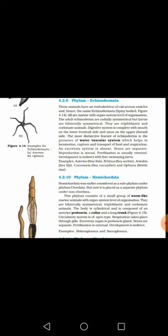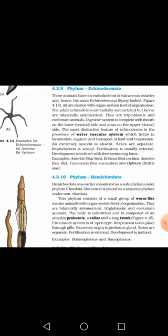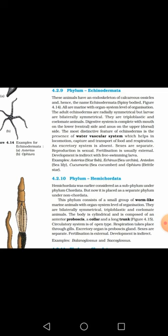The ventral side refers to the lower side and the dorsal side refers to the upper side. Now, the most distinctive feature of echinoderms is the presence of the water vascular system, also called the water tube system. This system helps in locomotion, capture and transport of food, and respiration.